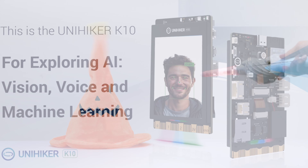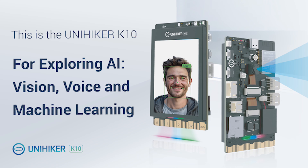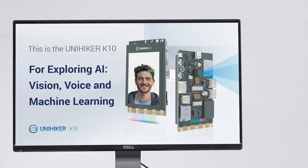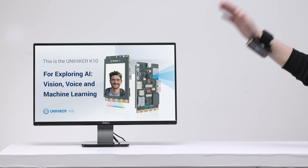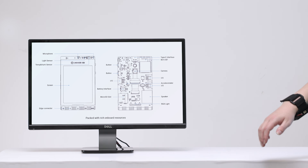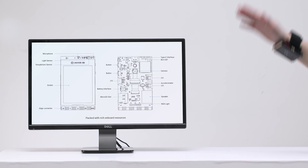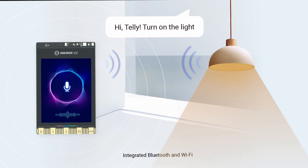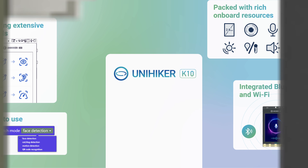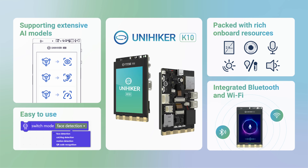This is UniHiker K10, packed with rich onboard resources, supporting extensive AI models, integrated Bluetooth and Wi-Fi. Start exploring AI with UniHiker K10.